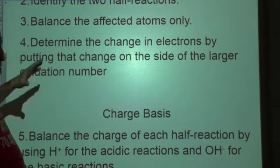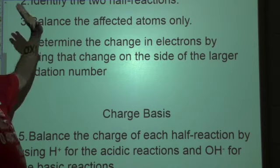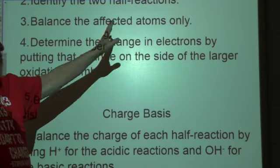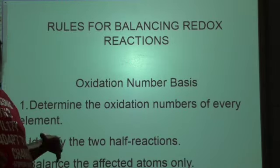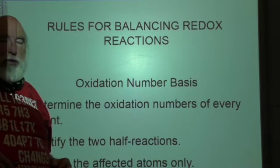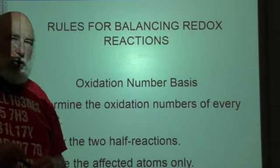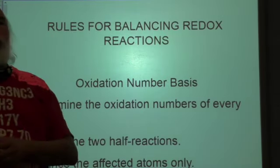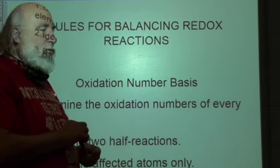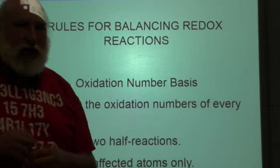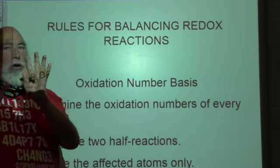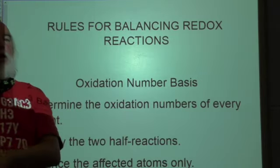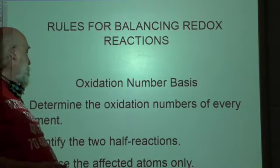There are eight parts total, so the first half deals with the oxidation numbers and the second half deals with the charges. If you follow the step-by-step process, you will find that this is fairly easy to figure out. There are a couple of pitfalls I'm going to warn you about now, and I'll warn you about more later on.